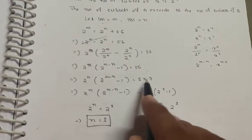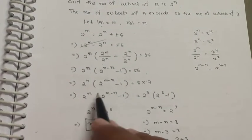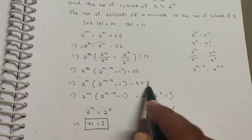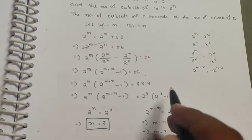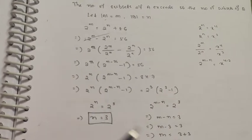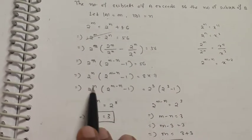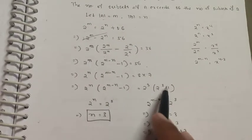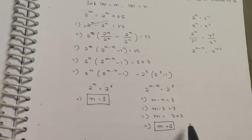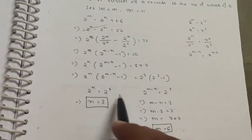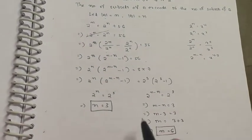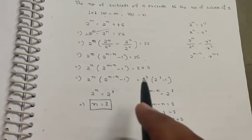Since 56 equals 8 times 7, we get 2^n times (2^(m−n) − 1) equals 8 times 7. So 2^n equals 8, which means n equals 3, and 2^(m−n) − 1 equals 7, so m minus n equals 3. Therefore m equals 6. Cardinality of A equals 6 and cardinality of B equals 3.